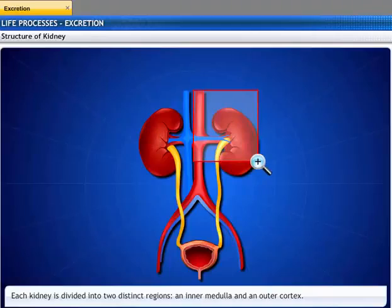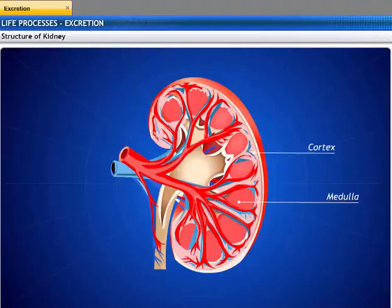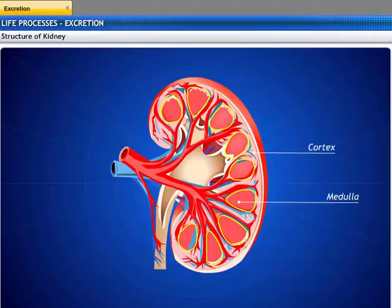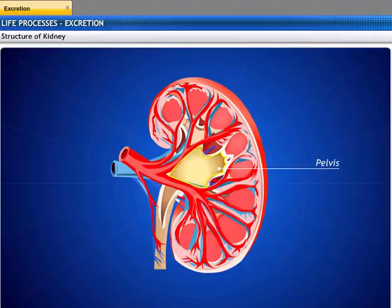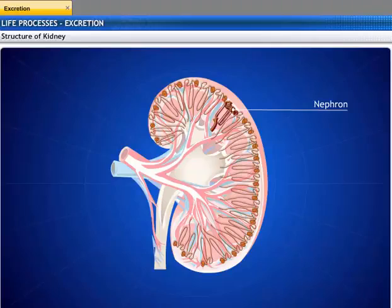Each kidney is divided into two distinct regions: an inner medulla and an outer cortex. The cortex forms a shell around the medulla. The medulla is composed of conical masses of tissue that lead to the pelvis. The cortex has a random arrangement of tiny tubules called nephrons, which are the functional units of the kidney.